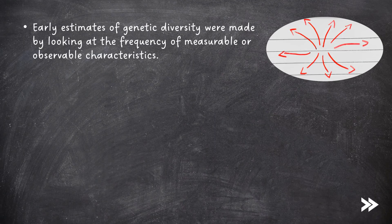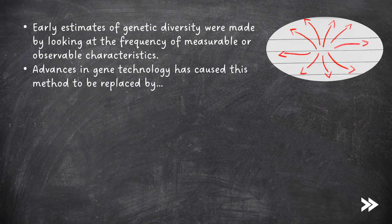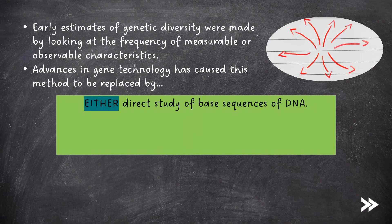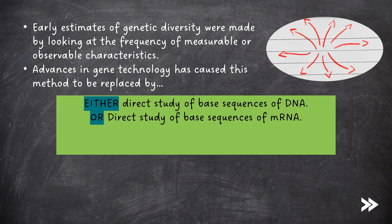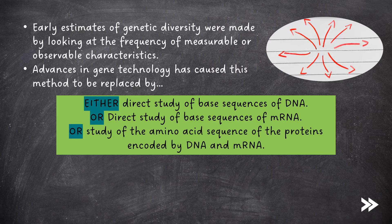Early estimates of genetic diversity were made by looking at the frequency of measurable or observable characteristics. Advances in gene technology have caused this method to be replaced by either the direct study of base sequences of DNA, or the direct study of base sequences of mRNA. Alternatively, the study of amino acid sequences of the proteins encoded by DNA and mRNA can also be used to investigate genetic diversity.